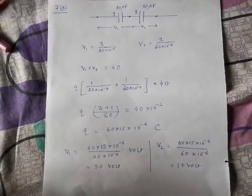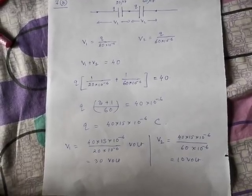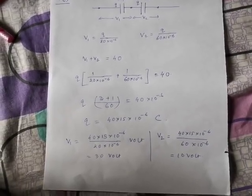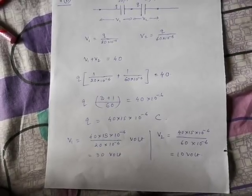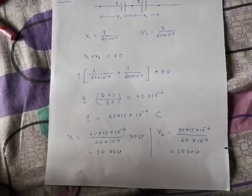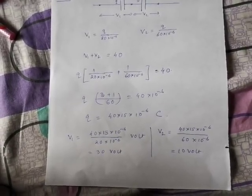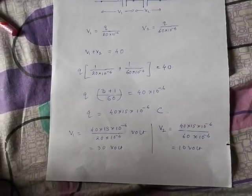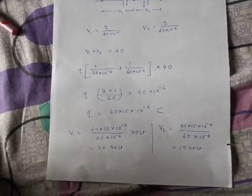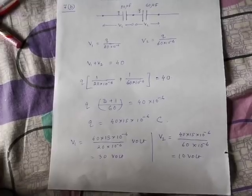V1 is equal to 30V and V2 is equal to 10V. This is the process.